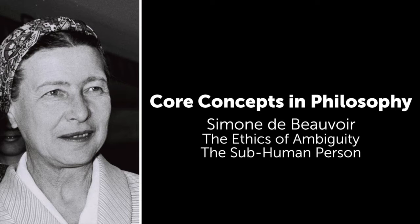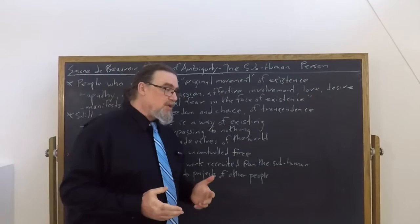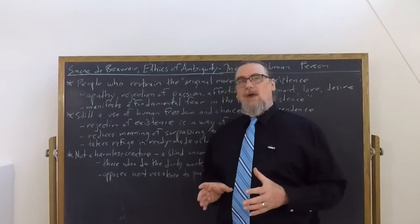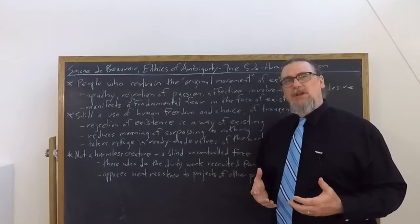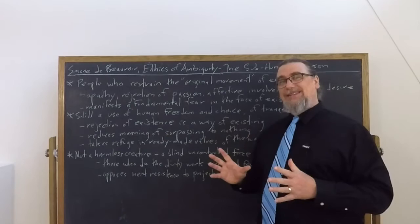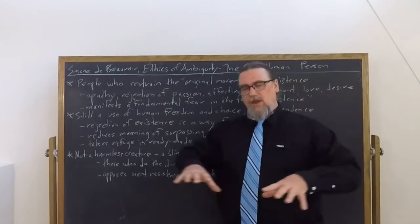In the second part of her work, The Ethics of Ambiguity, Simone de Beauvoir is going to run through a sequence of different existential stances or modes of existence. Each of which, in a certain way, is defective or deficient. It betrays human freedom by using human freedom against itself. And the first one that she examines is the sub-man.